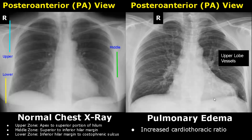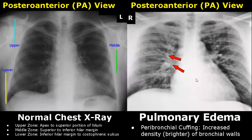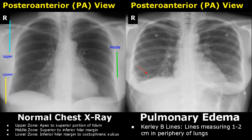Increased cardiothoracic ratio is another feature if there is an association with a cardiac abnormality — you can see an enlarged heart. In peribronchial cuffing, there is increased density of bronchial walls and these walls will appear brighter. You can see the walls of the bronchi are brighter here, whereas in the normal image this is not seen. Curly lines are a series of bright lines seen at different locations of the lung parenchyma, and they occur due to edema.